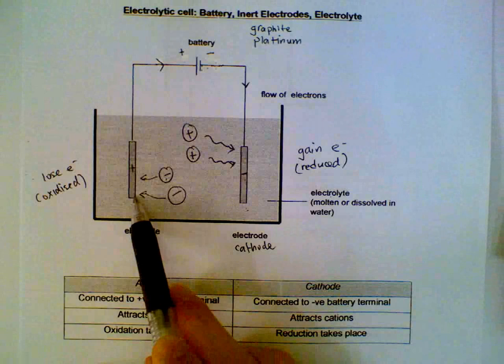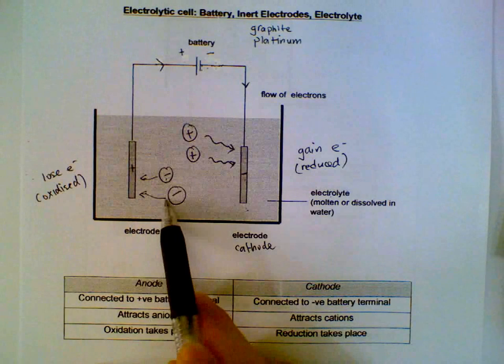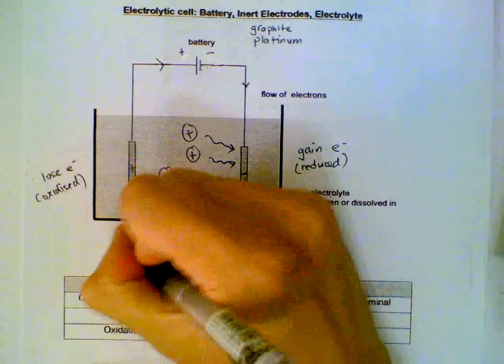This electrode is positively charged. It attracts anions. They call this the anode.